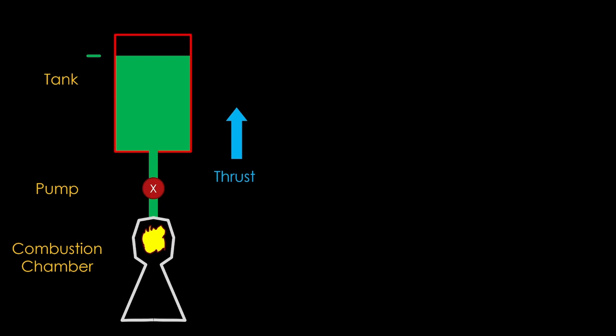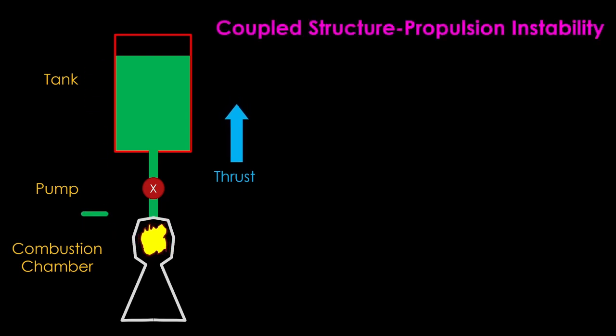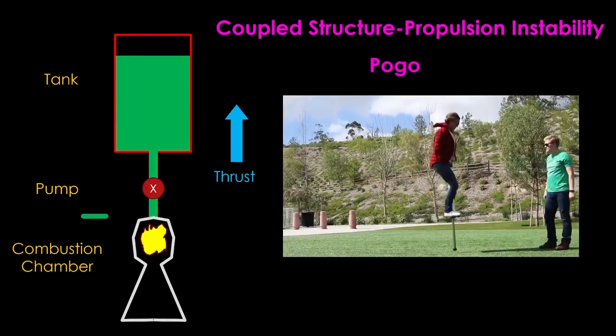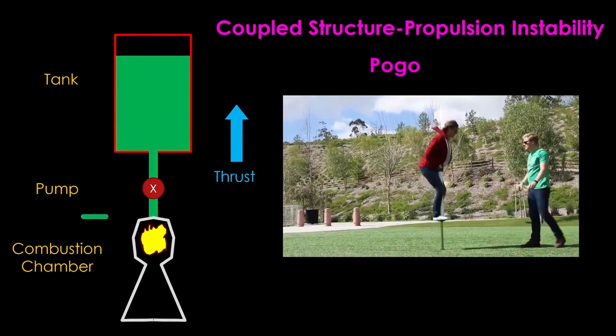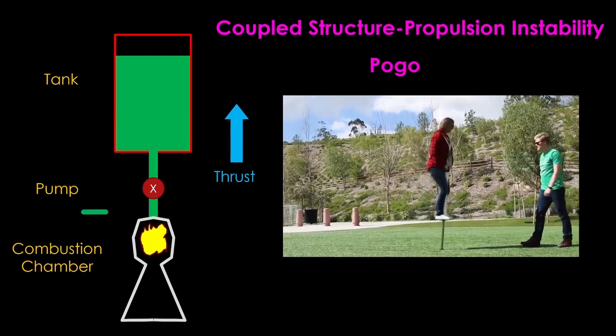This situation is very much like the swing we looked at. If the pressure pulse arrives at just the right time, as the pressure is already going up, it's like the push on the swing that sends it higher. We end up with an oscillation that continues as long as the proper conditions persist. This is formally known as coupled structure propulsion instability. The structure of the rocket and the behavior of the engine are working together to produce a problem. It's more commonly known as pogo, because the up and down thrust variations are like the motion of someone on a pogo stick.